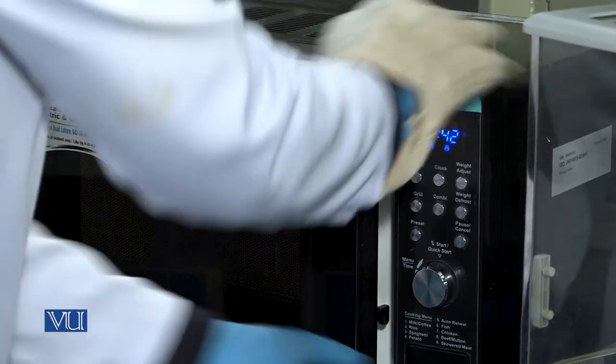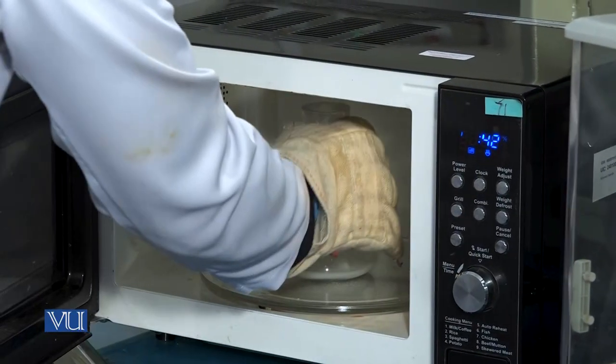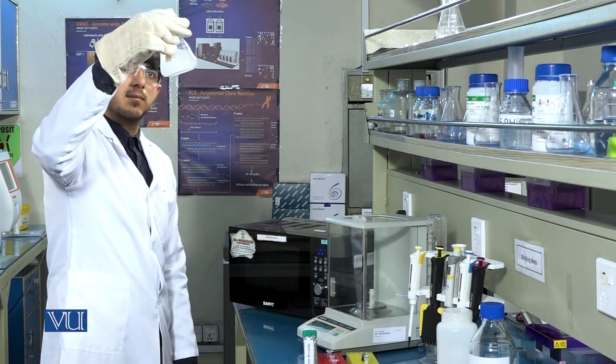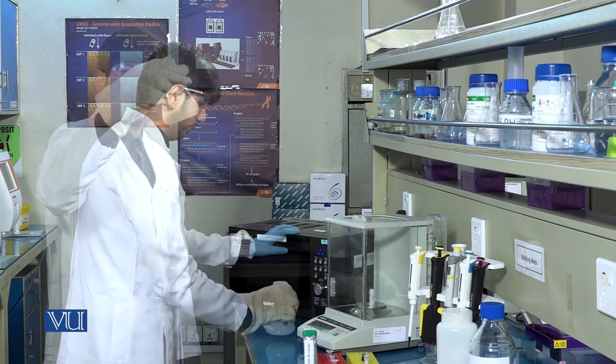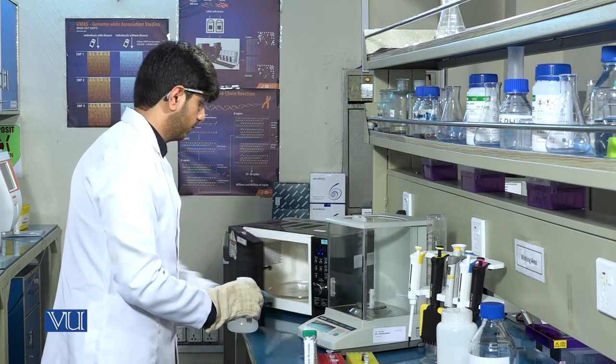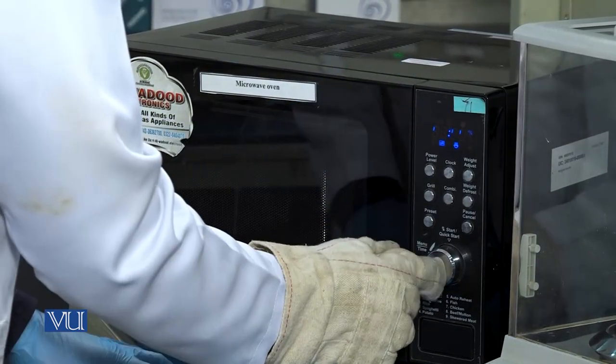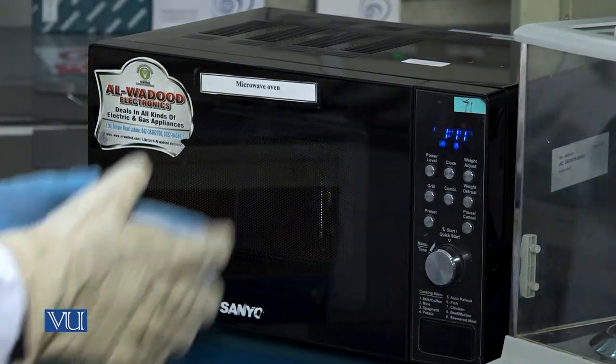After one minute, take out the flask with the help of heat resistant glove and see whether contents have been dissolved or not. If contents are not dissolved, place the flask again in the oven until solution becomes clear.